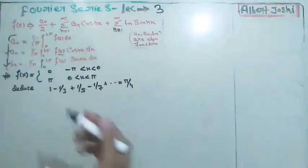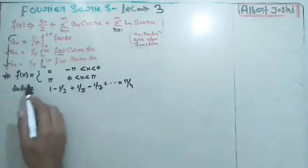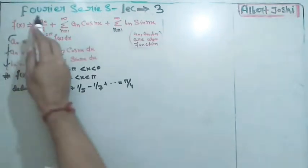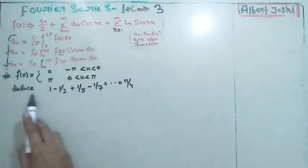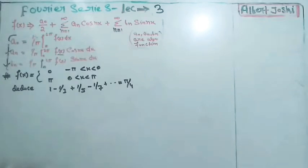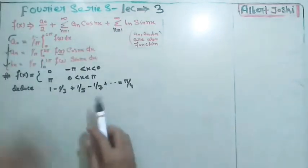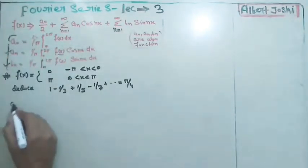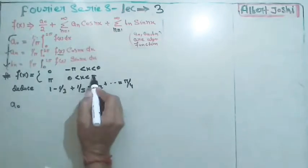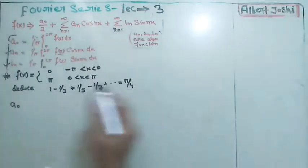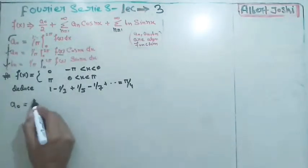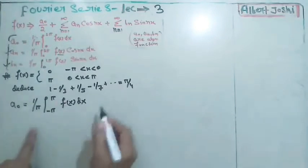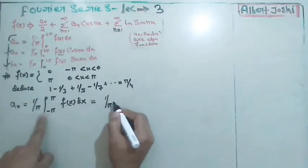The task is to first write the function in Fourier series form and then deduce a result. We need to calculate a₀, aₙ, and bₙ and substitute the values. The interval is from −π to π, so a₀ = (1/π) ∫₋π^π f(x) dx.